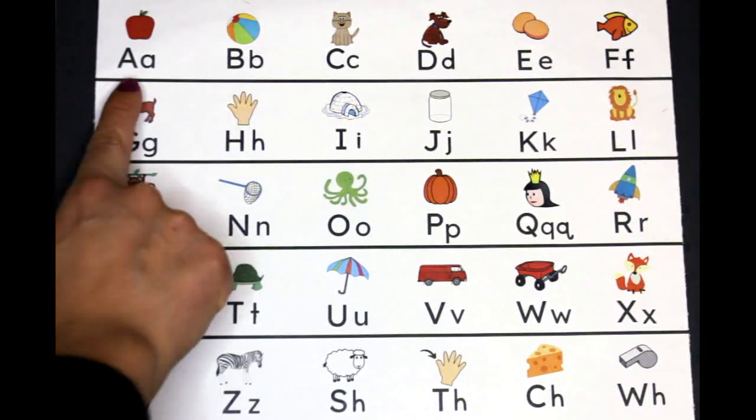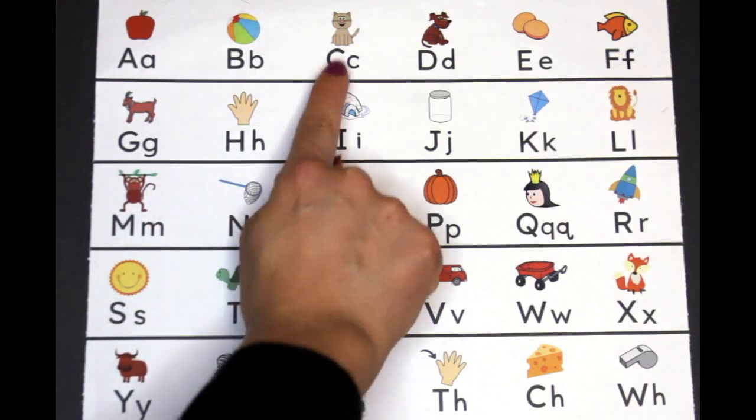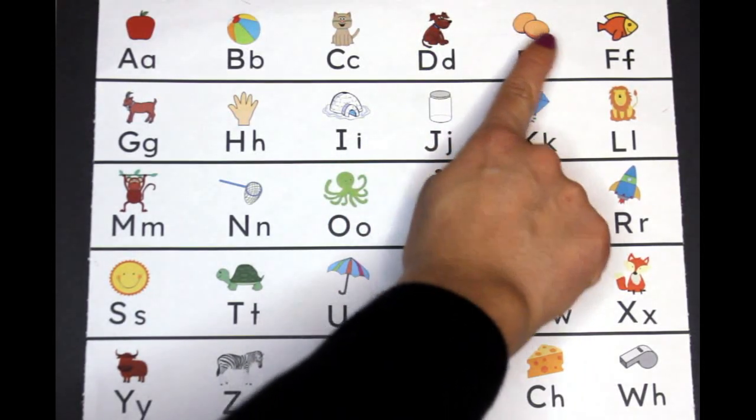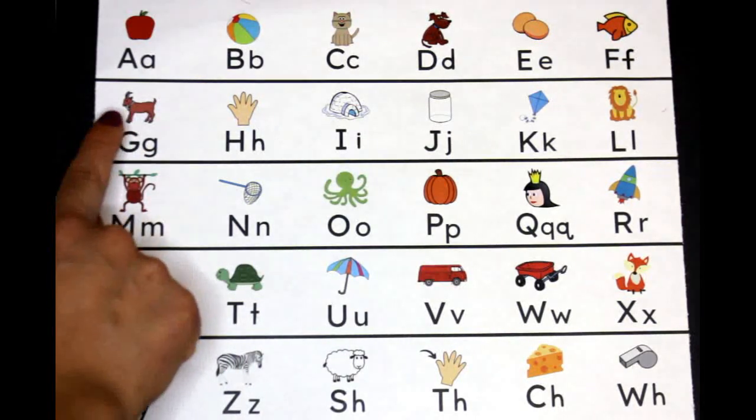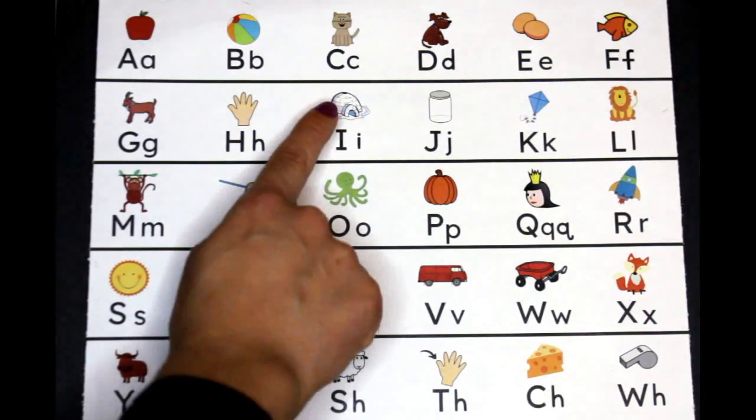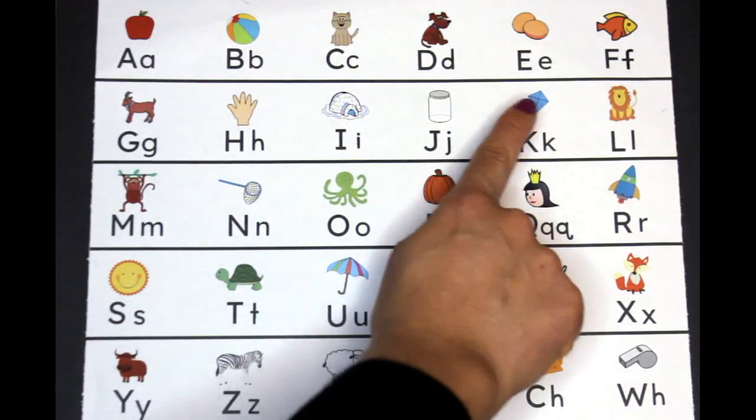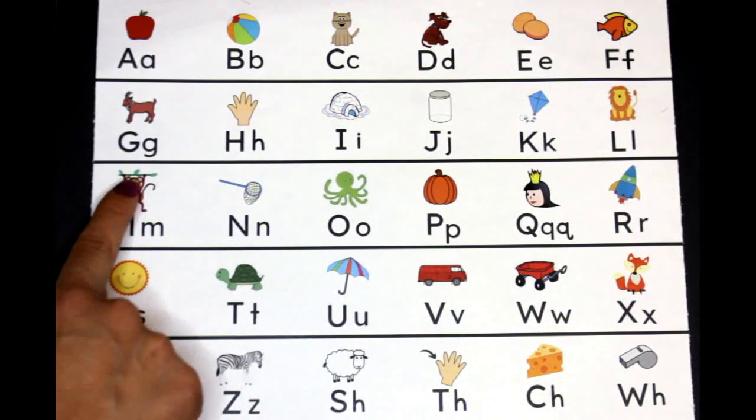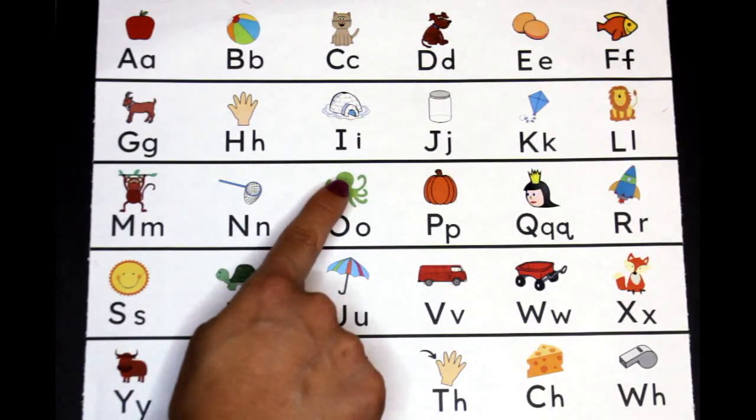A-a-apple, B-b-ball, C-c-cat, and D-d-dog. E-e-egg and F-f-fish. G-g-goat and H-h-hand. I-i-igloo, J-j-jar, K-k-kite, and L-l-lion. M-m-monkey, N-n-net, O-o-octopus, and...